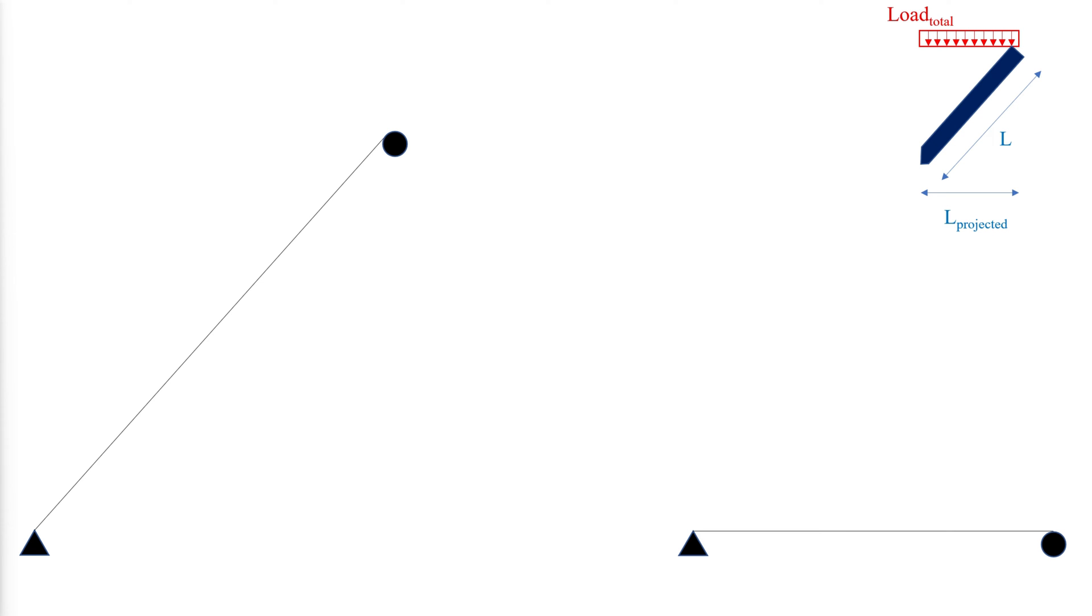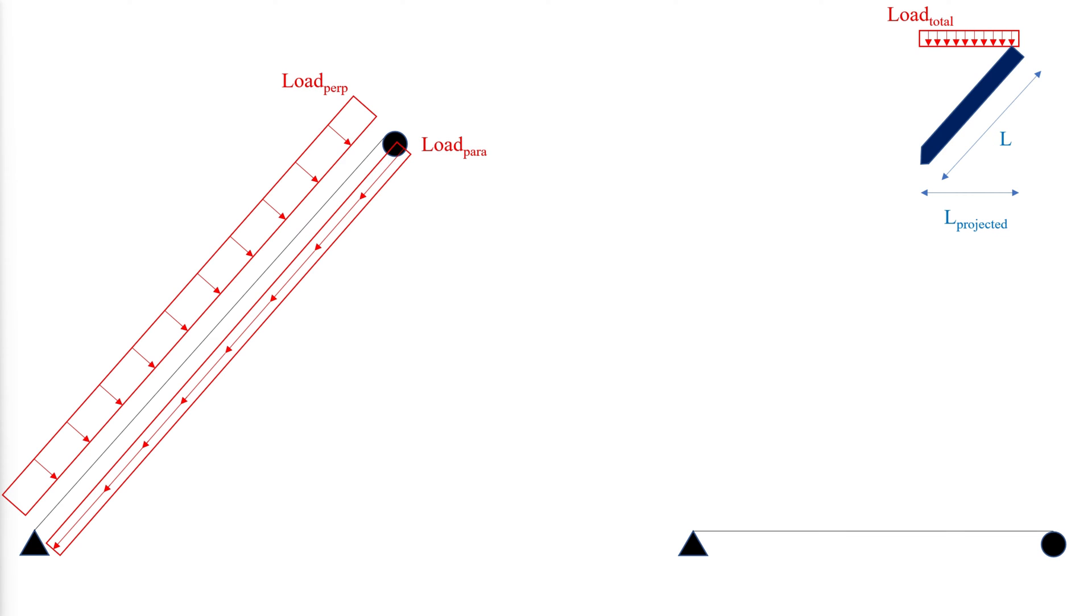In the sloping beam method, the gravity load is resolved into components that are parallel and perpendicular to the stringer. The values for required strength in shear and moment are based on the normal component of the load and a span length equal to the full length of the sloping stringer.